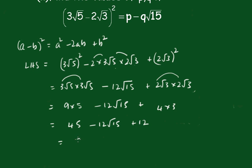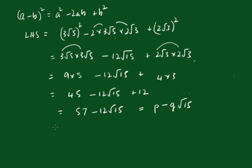Now that's equal to p - q√15. Therefore p must be 57 and q must equal 12.